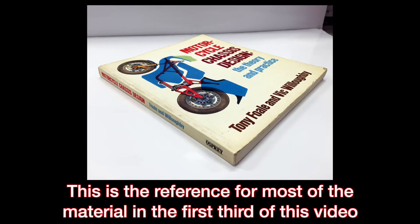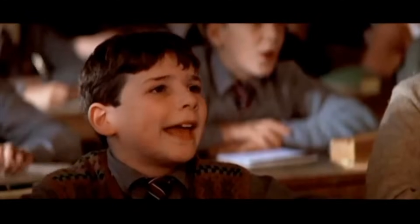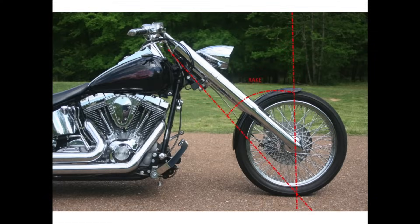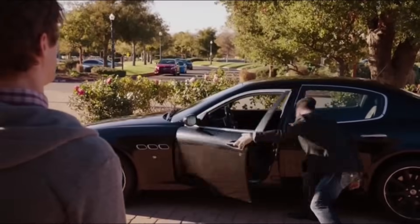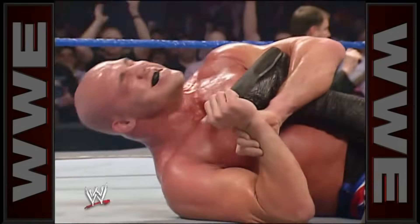Before we dive headfirst into the cold and unfeeling waters of motorcycle mechanics, we got to make sure that we understand some important terms. You can't have any pudding if you don't eat your meat. Yes, you. Rake is the angle of your motorcycle's head in relation to the ground. A higher rake angle generally increases stability at higher speeds but makes cornering harder. This is why sport bikes look like this and cruisers look like this. Trail is the distance between the center of the front tire's contact patch on the road and the point where an imaginary line passing through the center of the headstock axis meets the ground. And torque is a twisting force that causes rotation.